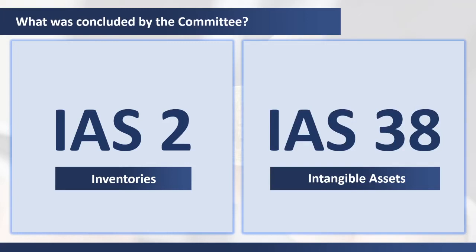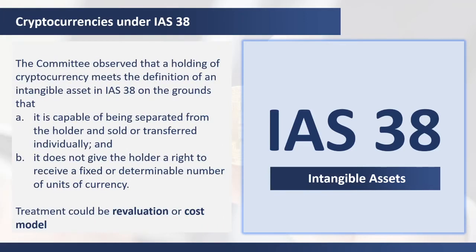Holdings of cryptocurrencies not held for sale in the ordinary course of business are accounted for using IAS 38 on intangible assets. The committee observed that a holding of cryptocurrency meets the definition of an intangible asset in IAS 38 on the grounds that it is capable of being separated from the holder and sold or transferred individually, and it does not give the holder a right to receive a fixed or determinable number of units of currency. Under IAS 38, the entity will have an option to treat the cryptocurrency under the revaluation or cost model.